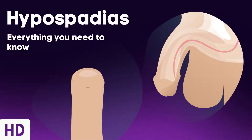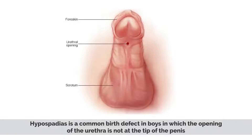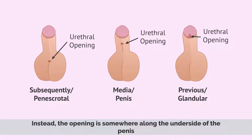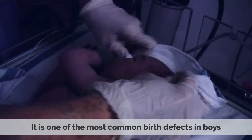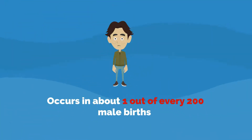Today's video topic is hypospadias. Hypospadias is a common birth defect in boys in which the opening of the urethra is not at the tip of the penis. Instead, the opening is somewhere along the underside of the penis. It is one of the most common birth defects in boys and occurs in about one out of every 200 male births.